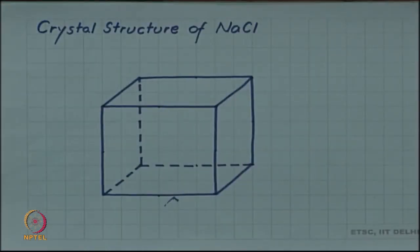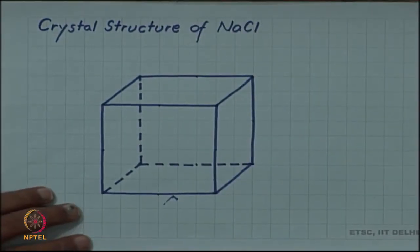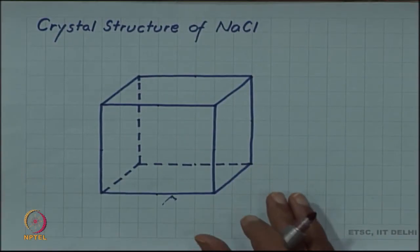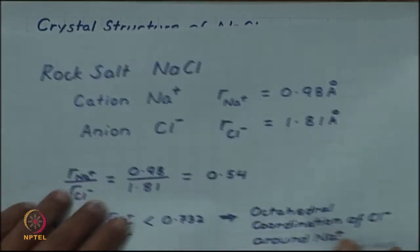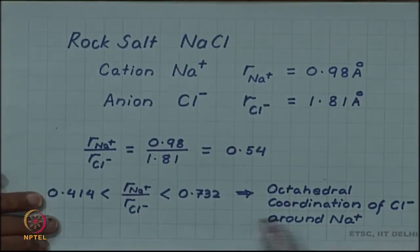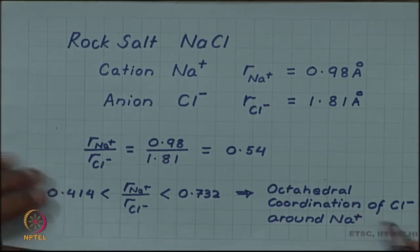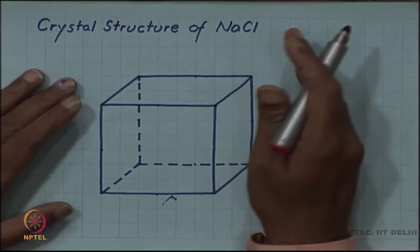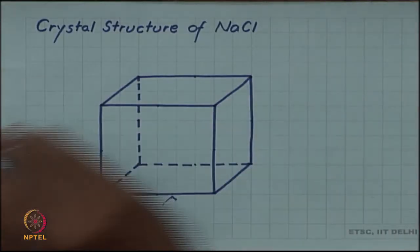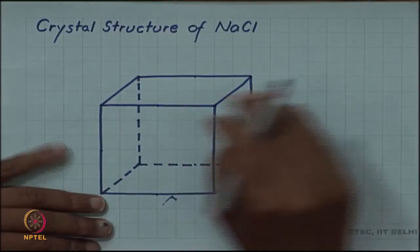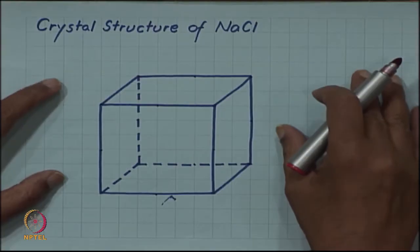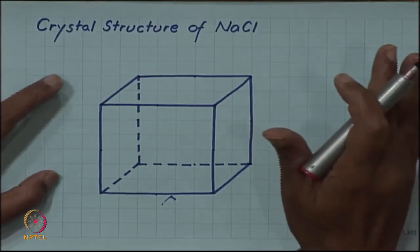Let us make the crystal structure of sodium chloride. Notice that this radius ratio dictates the local coordination - there will be 6 chloride ions around 1 sodium ion - but how they form the real crystal structure cannot be decided by that alone. The real crystal structure has to be solved or calculated separately.